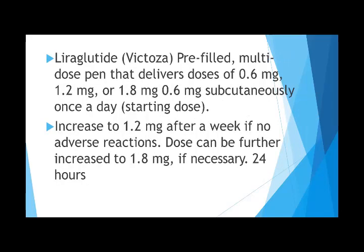Another GLP-1 receptor agonist is liraglutide, brand name Victoza, available as a pre-filled multi-dose pen delivering doses of 0.6, 1.2, or 1.8 mg subcutaneously. The starting dose is 0.6 mg, gradually increased to 1.2 mg. After a week, if no adverse reactions occur, the dose can be further increased to 1.8 mg if necessary.